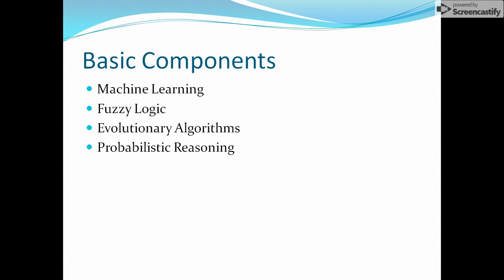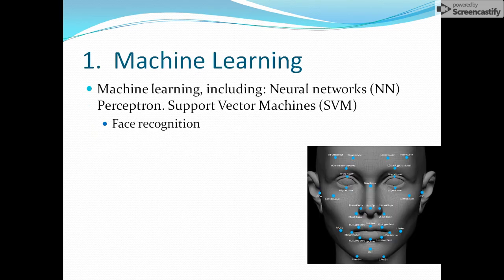The basic components of soft computing are machine learning, fuzzy logic, evolutionary algorithms, and probabilistic reasoning. Machine learning is an area where we work on how machines are going to learn. It includes neural networks, perceptrons, and support vector machines — we will discuss machine learning in later videos. It is one of the basic components of soft computing. An example is face recognition.